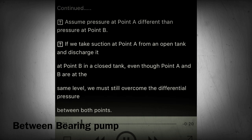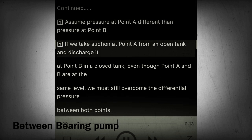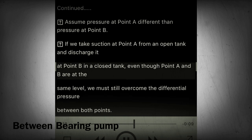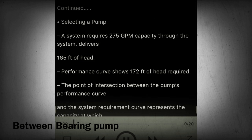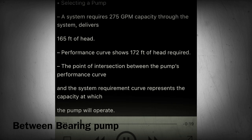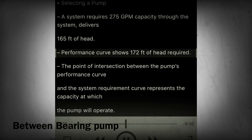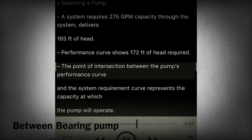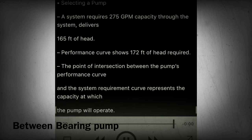Sections 33-34 - If the pressure at point A is different than the pressure at point B — for example, taking suction at point A from an open tank and discharging at point B into a closed tank — even though points A and B are at the same level, we must still overcome the differential pressure between both points. For pump selection example: a system requires 275 GPM capacity, delivering 165 feet of head, while the performance curve shows 172 feet of head required. The intersection of the pump's performance curve and the system requirement curve represents the capacity at which the pump will operate.